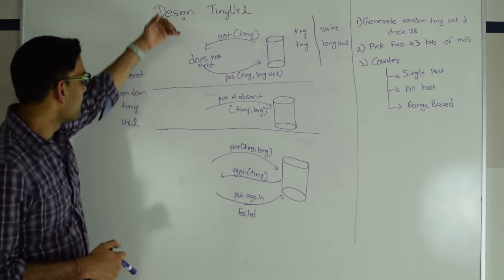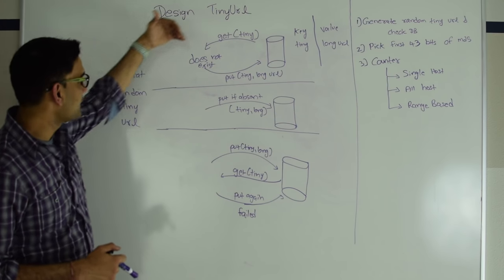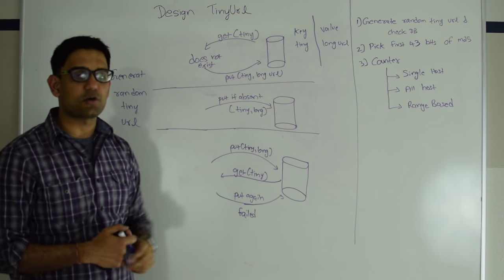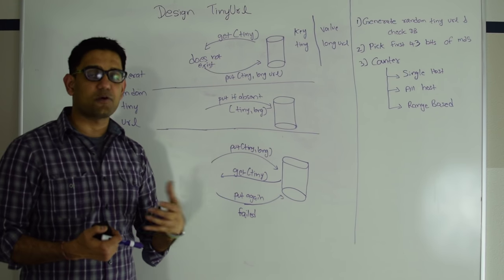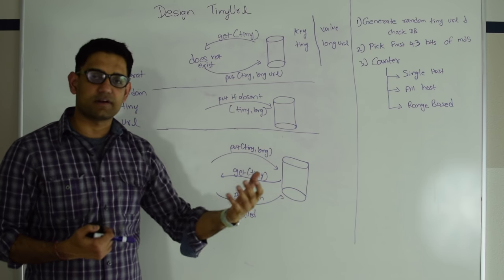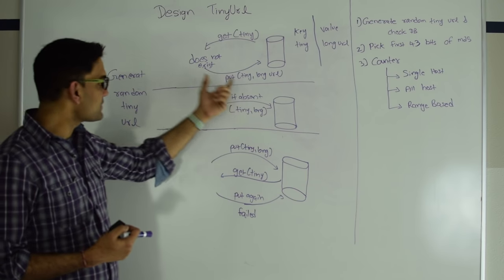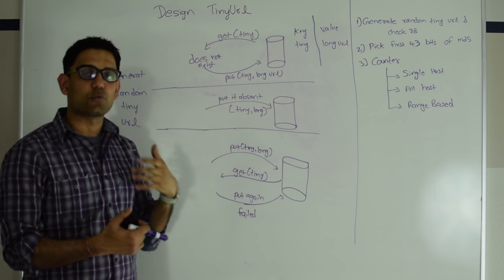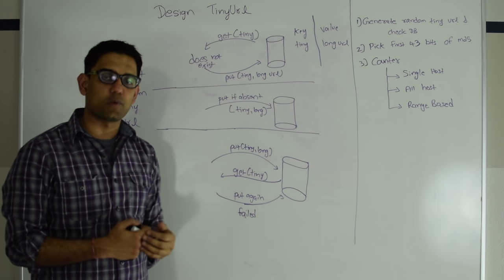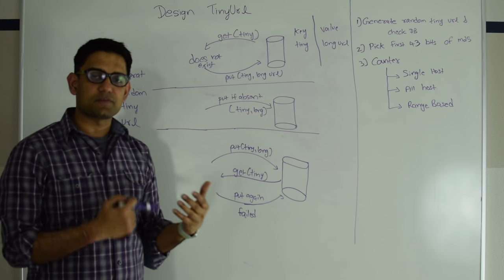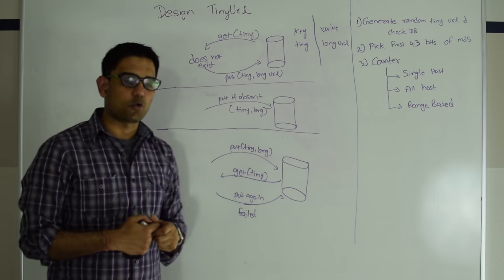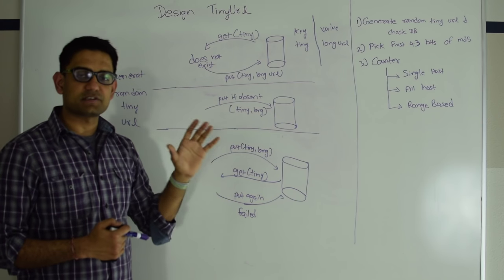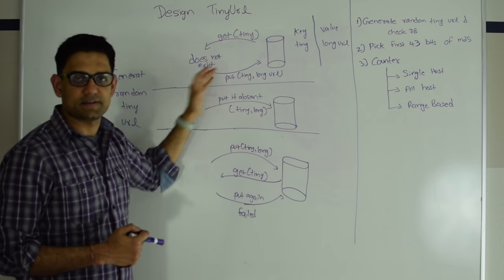Why? Because after the worker is done checking (GET) and while he's doing the PUT, another worker thread for another request could be putting the same tiny URL for some other long URL into the database. One of those PUTs is going to win and it's going to corrupt the long URL for the other request. So a stable production system will not deploy this technique.